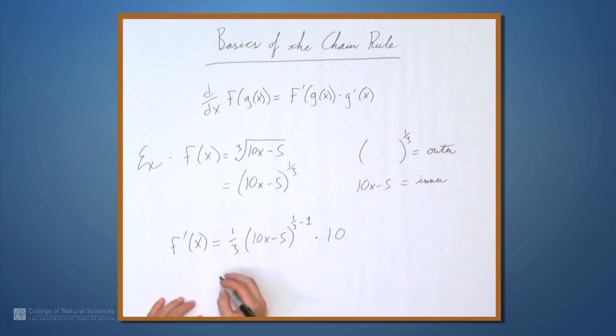So if we simplify a little bit, we get 10 thirds times the quantity 10x-5 to the negative two-thirds. And that's how we get f'. Let's look at another example.